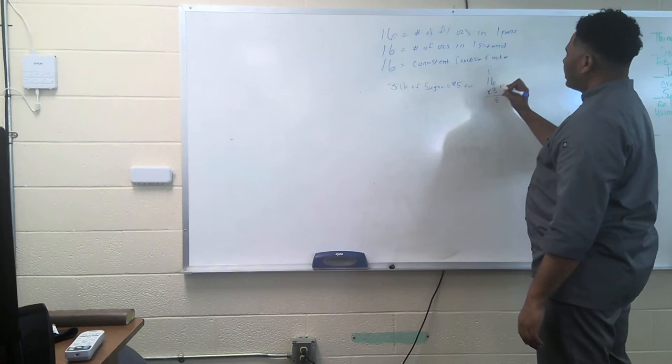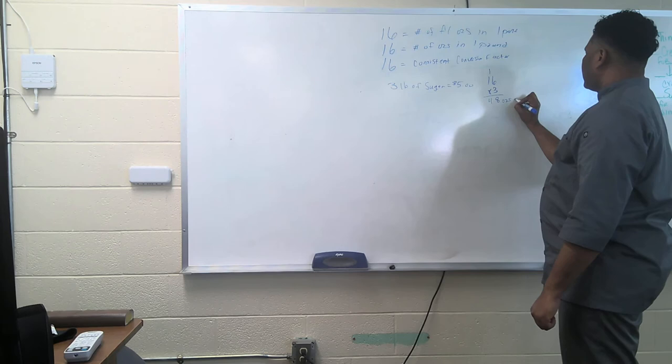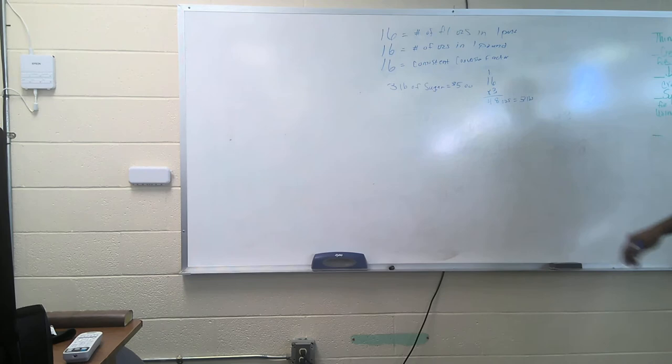Naturally, six times three is 18. Bring the eight down, carry the one. One times three is three, three plus one is four. So now you have your answer. There are 48 ounces in three pounds.